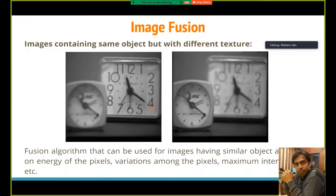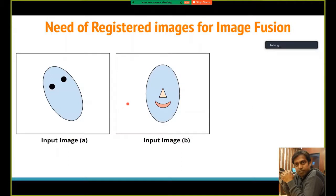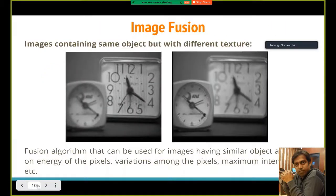In medical image fusion, we are dealing with this second category — scanning the same body organ using different modalities. Once we scan the same body organ with different medical imaging modalities, our task is to combine the information so that complete information about the body organ can be obtained. But before coming to the medical imaging modality, I should talk about the need for registered images for image fusion.